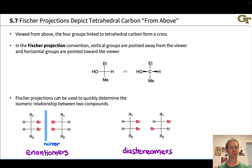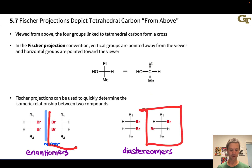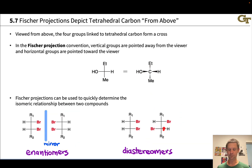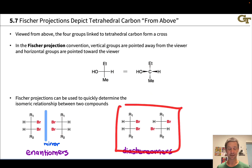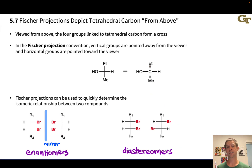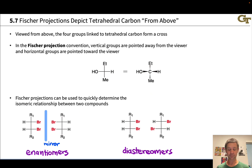In this situation on the right, this structure is no longer the mirror image of this structure. We can verify that by noting that this structure and this one are different - they differ in configuration at this carbon right here. That makes these two compounds diastereomers. They have the same connectivity, same molecular formula, they differ in the positions of atoms in three-dimensional space and they are not mirror images due to this difference in configuration, but they have the same configuration at this upper stereocenter in the Fischer projection.